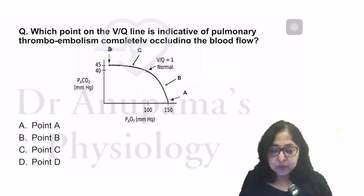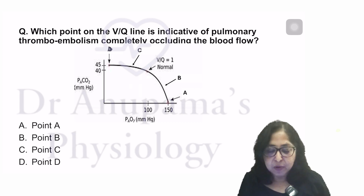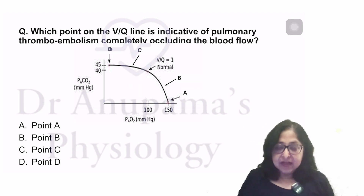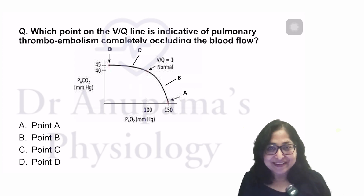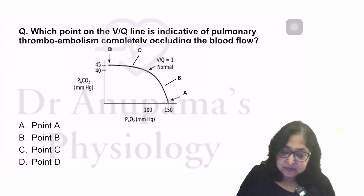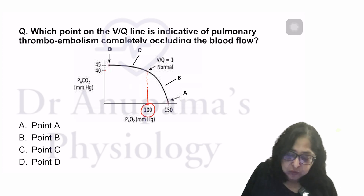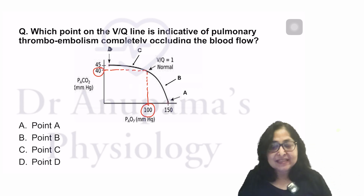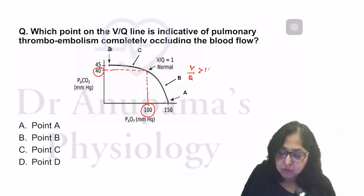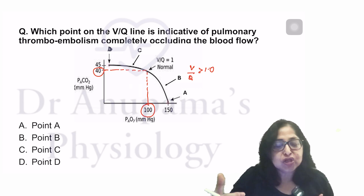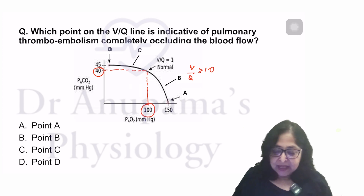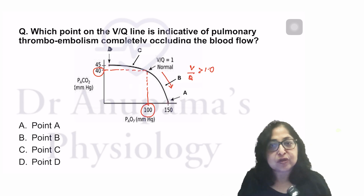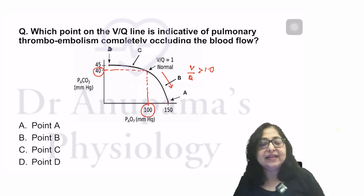The first question asks which point on the VQ line is indicative of pulmonary thromboembolism completely occluding the blood flow. The VQ line is something I discuss extensively in class, so my students will be familiar with this graph. When the VQ ratio is 1, the alveolar partial pressure of oxygen is 100 and CO2 is 40 mmHg. As the VQ ratio increases — meaning VQ becomes more than 1 — ventilation is in excess of perfusion, and values move towards point B and finally towards point A.